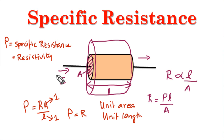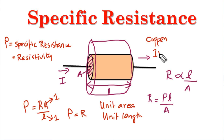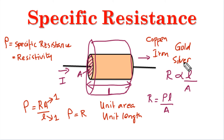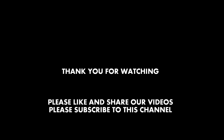If you need to change the flow of current, you need to change the resistivity. Each material has its own resistivity value — copper has a different resistivity, iron has another, and gold and silver have their own values. You can use the textbook values for resistivity of various metals.